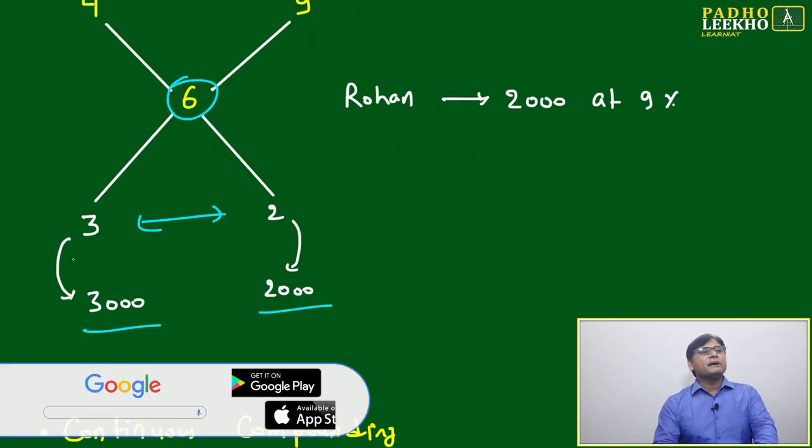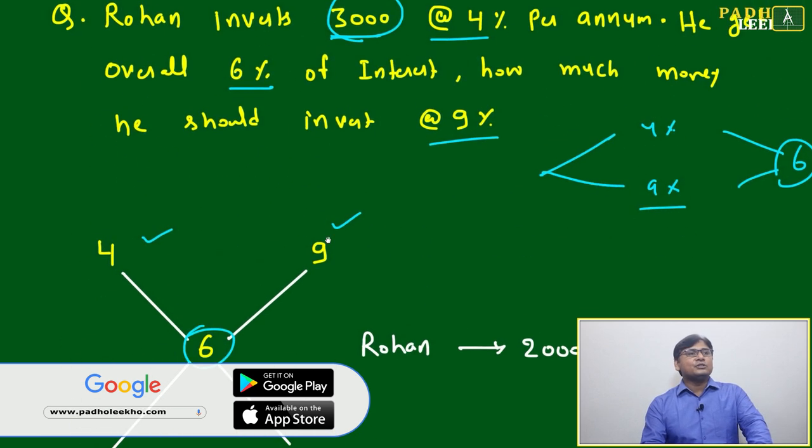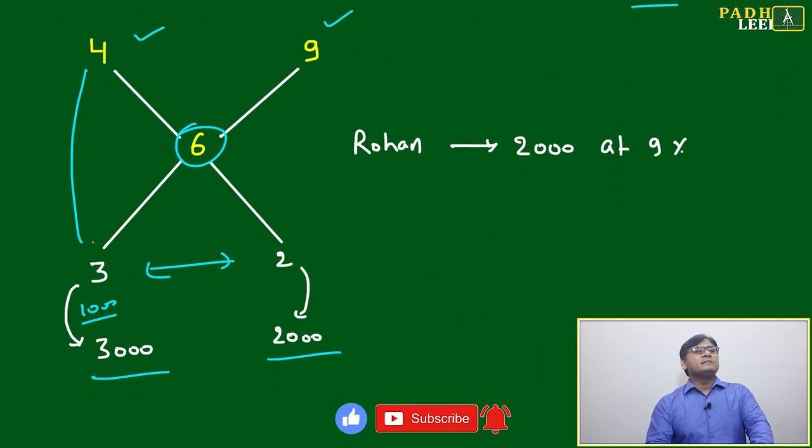This is your three thousand. This will come two thousand. What you have done? Factor multiplication - one thousand. Because we know three thousand is given in question.